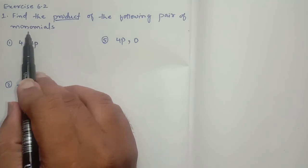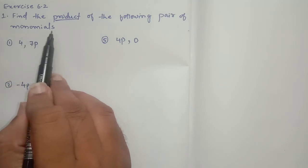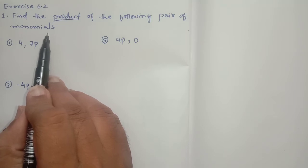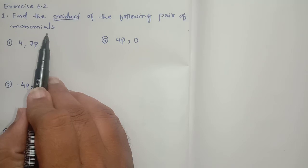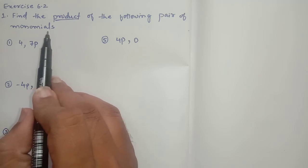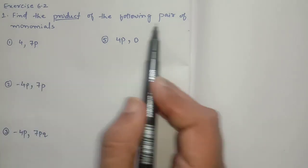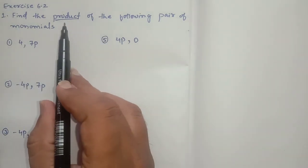Here, product of monomials. What do you mean by monomial? An expression having one term is called monomial. Keep in mind, an expression having one term is called monomial. So here some monomials are given, we have to find the product of those monomials.